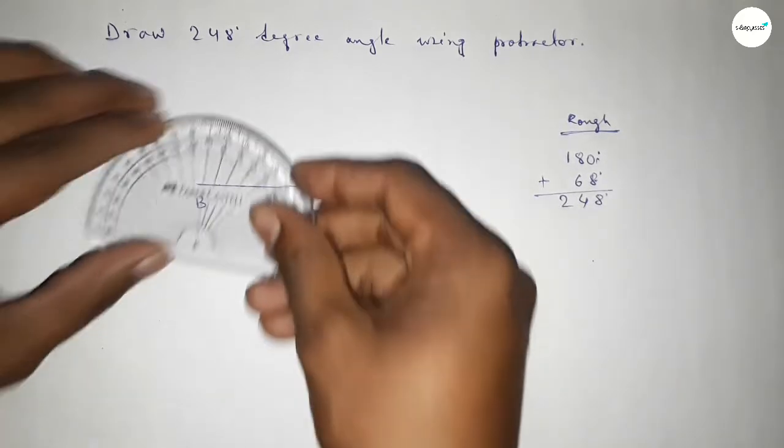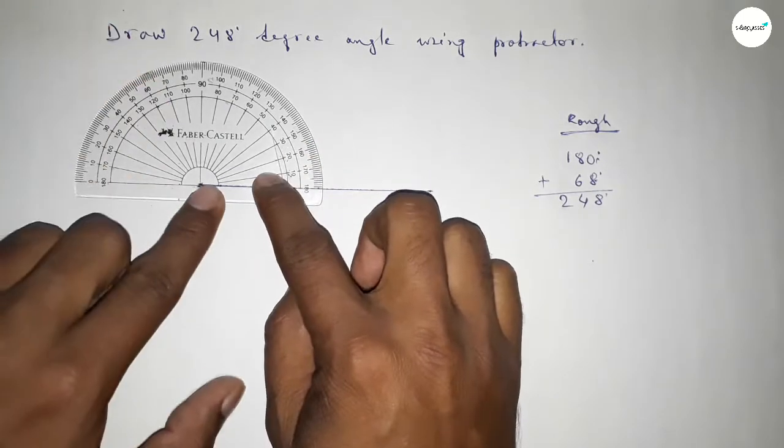So putting the protractor on the point B and counting 180 degrees. So this is 180 degrees.